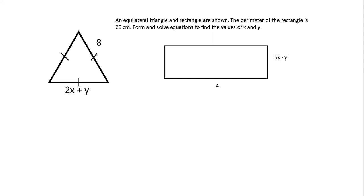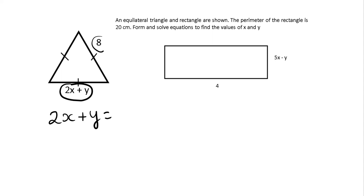The left shape is an equilateral triangle, and I'm going to use what I know about an equilateral triangle to help me form an equation. All the sides are the same because it's an equilateral triangle. So I can say that 2x plus y is going to be the same as the side labelled 8 centimetres. Therefore, 2x plus y equals 8.